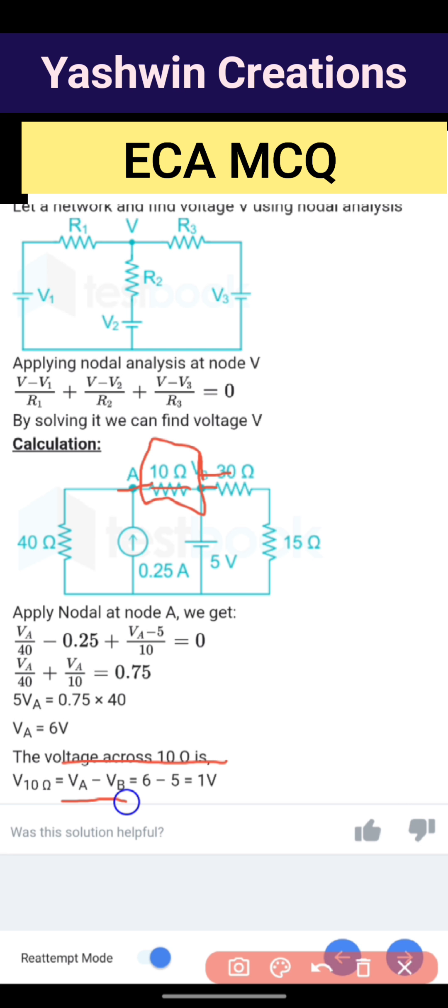So first apply nodal analysis at node A. Va divided by 40 minus 0.25 amps, plus (Va minus 5 volts) divided by 10 ohm, equals zero, because we are applying nodal at node A.